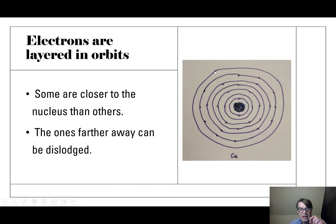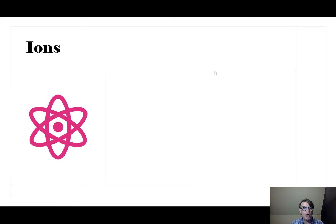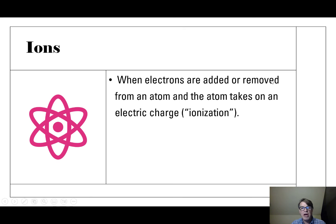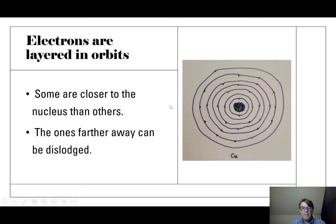What happens is when that final electron out there is dislodged, it becomes what's called an ion. When electrons are added or removed from an atom, the atom takes on an electric charge. So if this one goes away, it becomes less negative because it lost a negative electron, so it becomes positive. It becomes a positive ion.